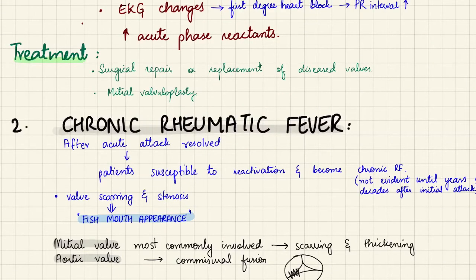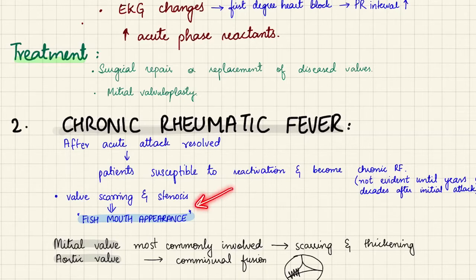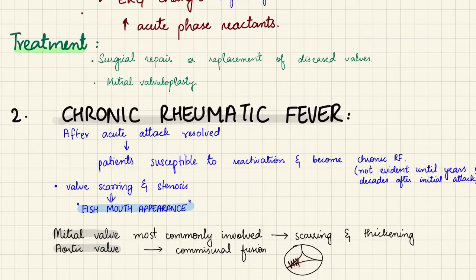After an acute attack, patients are susceptible to reactivation leading to chronic rheumatic fever. Symptoms may not be evident until years or decades after the initial attack. Chronic rheumatic fever causes valvular scarring and stenosis, with valves taking on a fish mouth appearance. The mitral and aortic valves are most commonly involved; the mitral valve undergoes scarring and thickening, while the aortic valve's commissures may fuse together forming a median raphe.